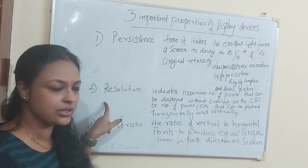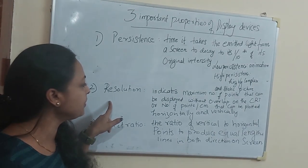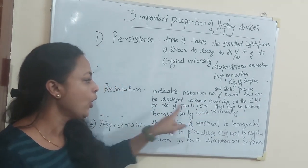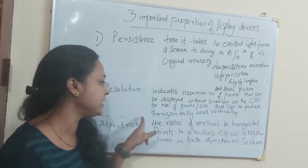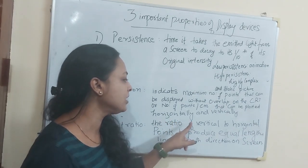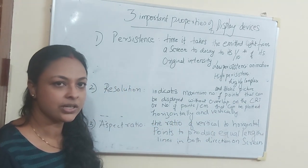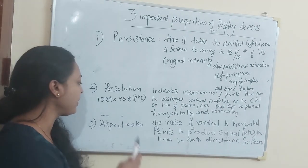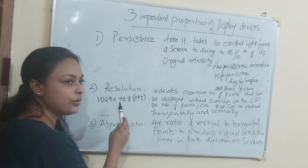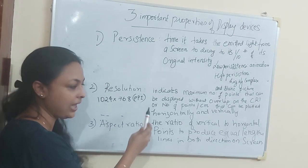The next one is resolution. Resolution is a very important property for display devices. Resolution indicates the number of points that can be displayed without overlap on the display from the CRT, or number of points per centimeter that can be plotted horizontally and vertically. We call it 1024 by 768. It is a standard resolution. It is represented in pixels per inch, PPI.